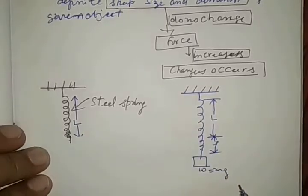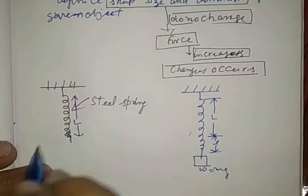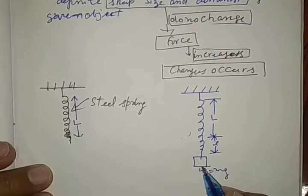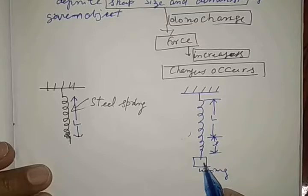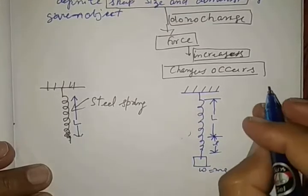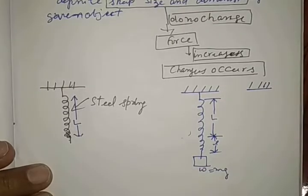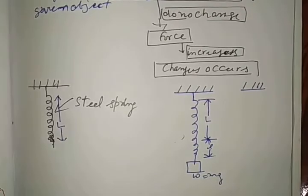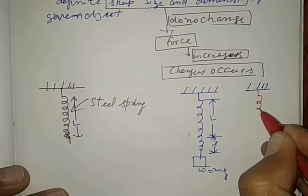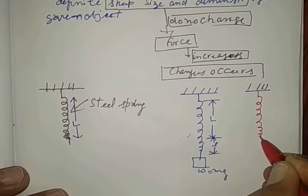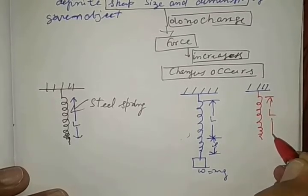When we release this, again it comes back and regains its position. When weight or force is removed from the spring, it returns back again to its same position. When weight is released, it comes back again to its natural length.